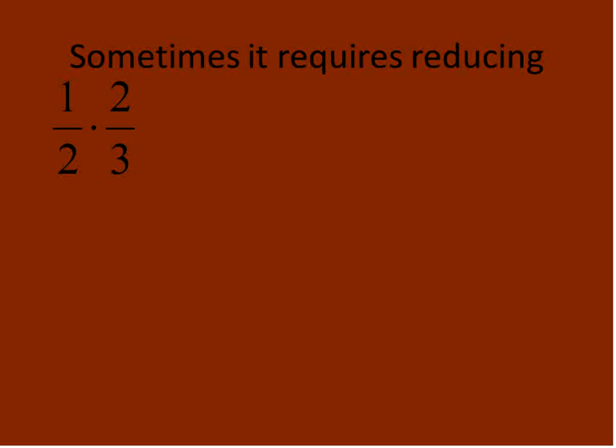You solve it in the same way. Top times top, 1 times 2. Bottom times bottom, 2 times 3. And what you'll end up with is, in this case, 2 over 6. 1 times 2 is 2. 2 times 3 is 6. We have 2 over 6.